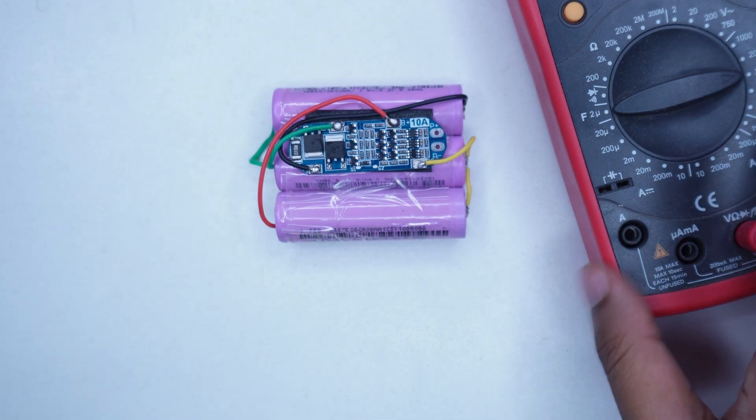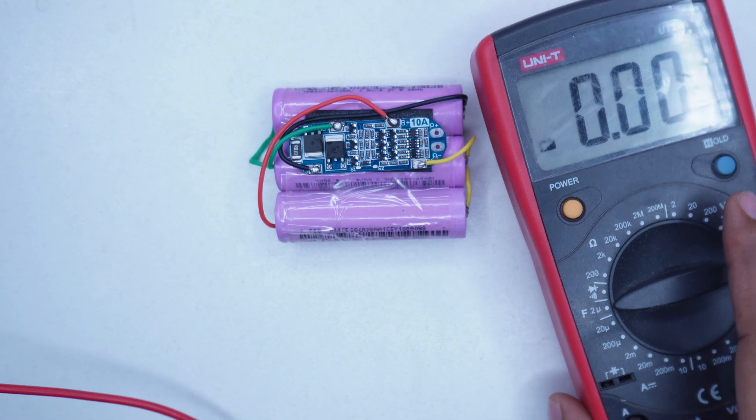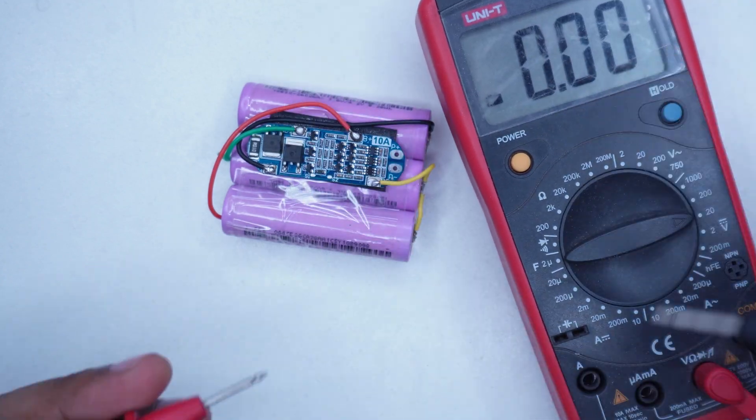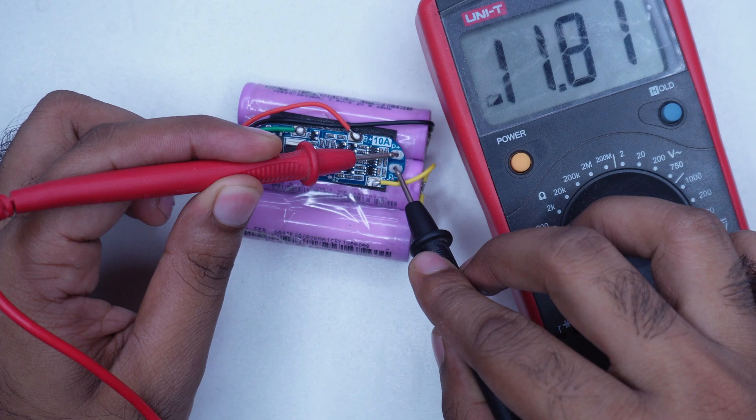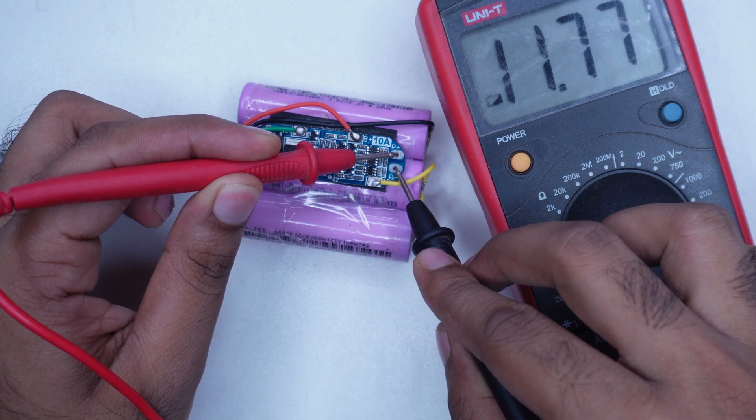I will use the meter to see how many volts our battery pack actually is. Here you can see it's showing 11.8 volts. That means our battery pack voltage is correct.